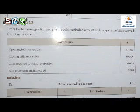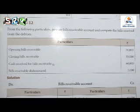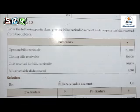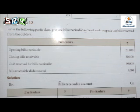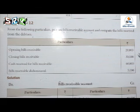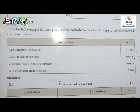Based on the above format, we look at Illustration 12. From the following particulars, prepare Bills Receivable Account and compute the bills received from the debtors. So from the heading we know we are using the Bills Receivable Account format. Particulars: Opening Bills Receivable: 20,000. Closing Bills Receivable: 30,000. Cash received for Bills Receivable: 60,000. Bills Receivable Dishonored: 5,000.